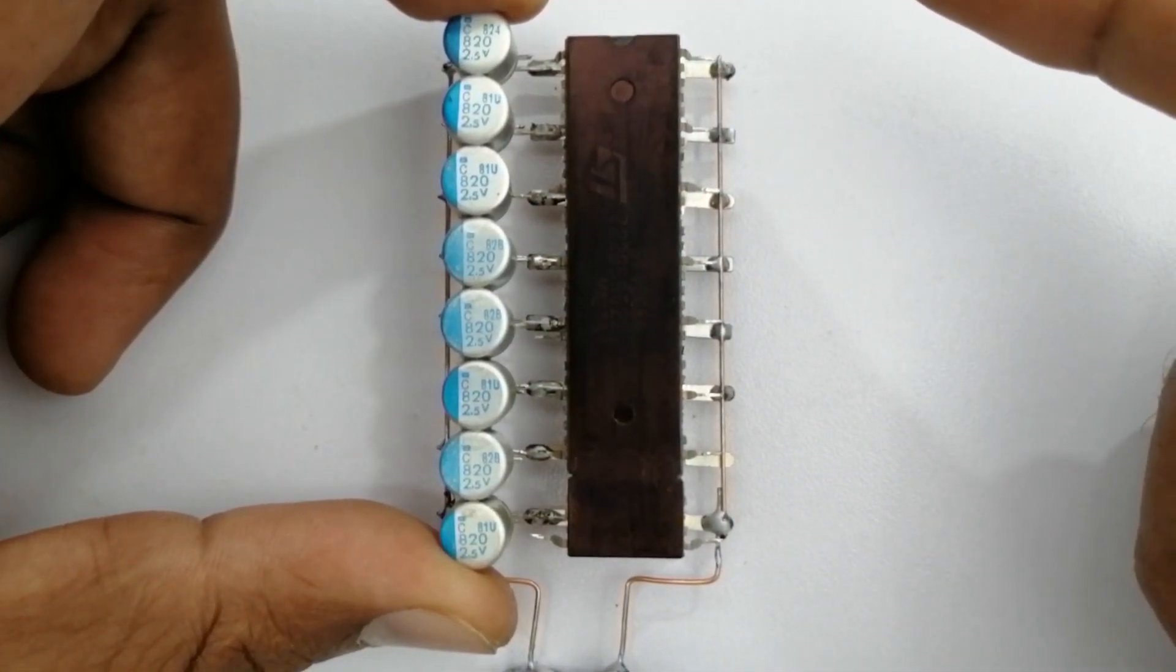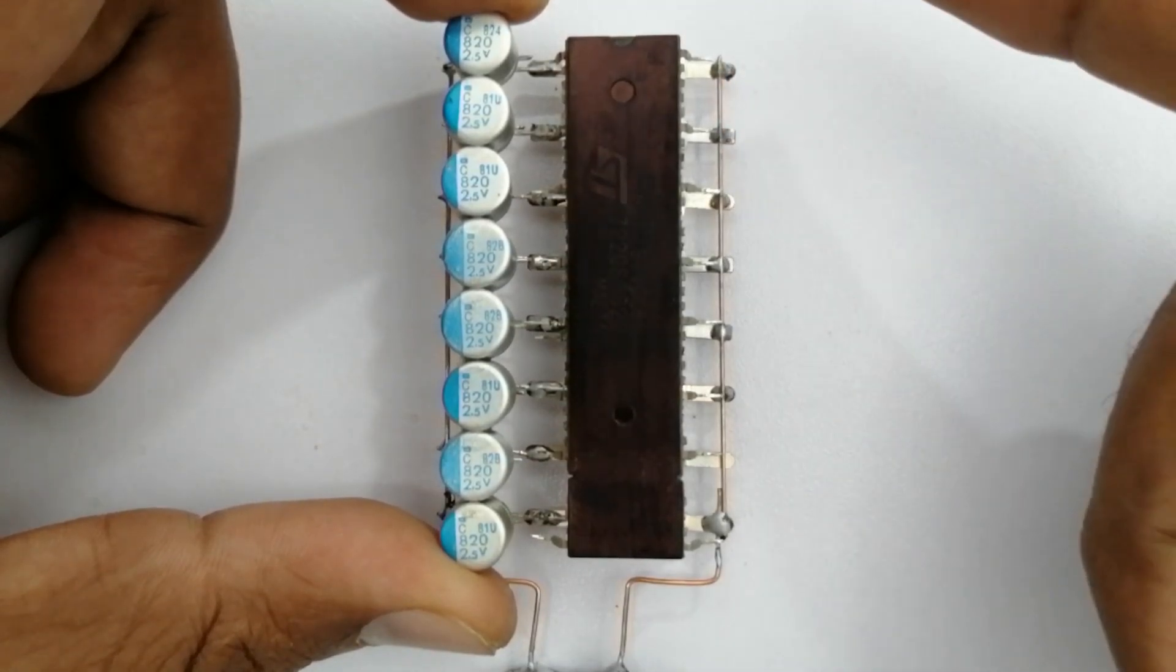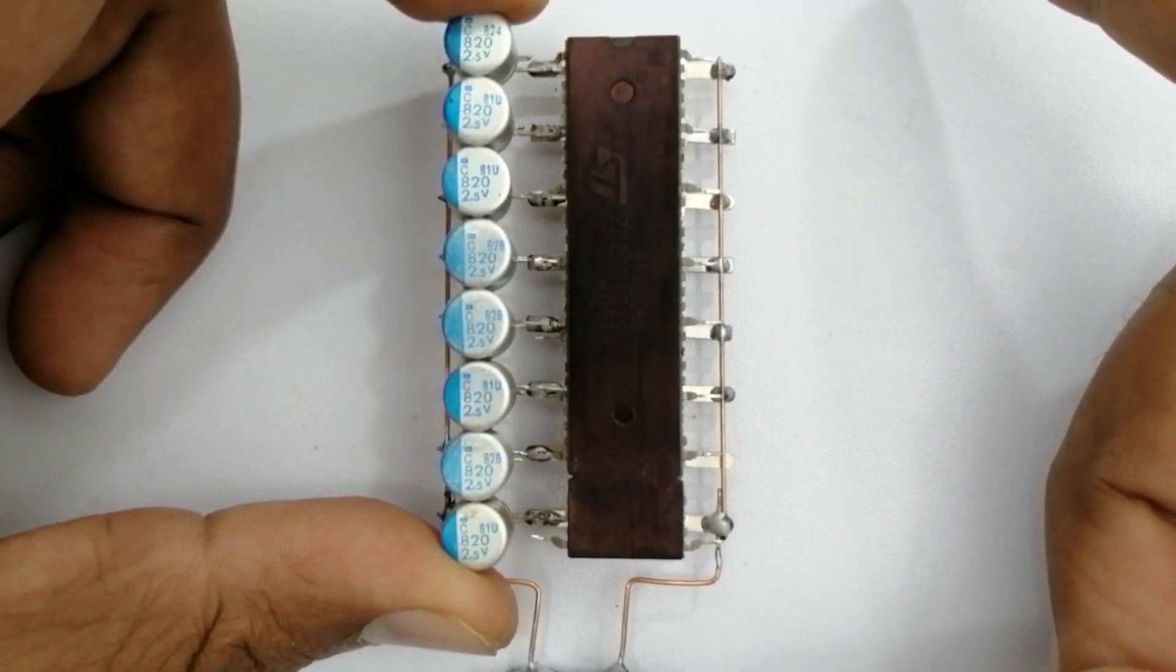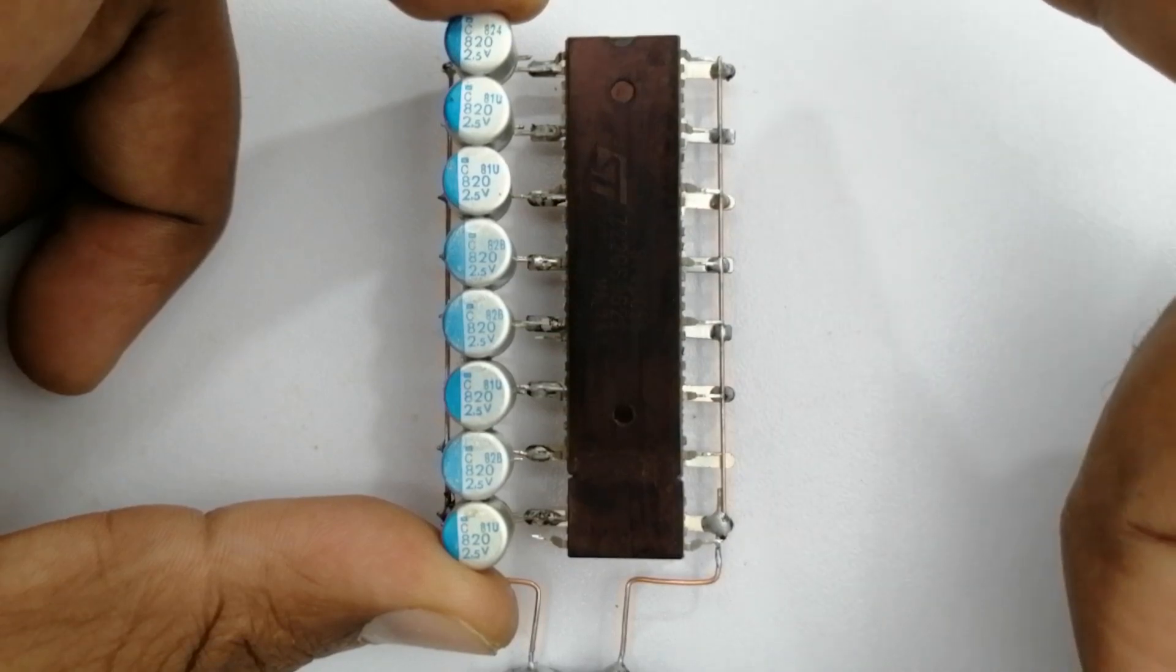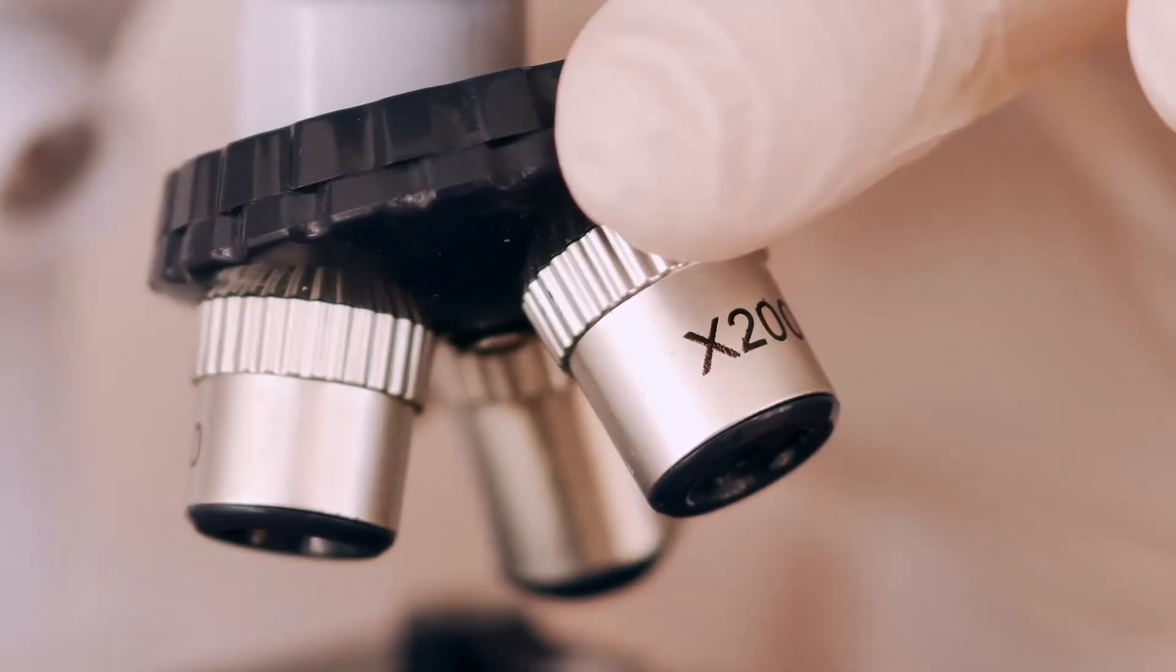Transistors and capacitors in a RAM are now so small as technology has advanced that we cannot see them with the naked eye. They can only be seen with the help of a microscope.